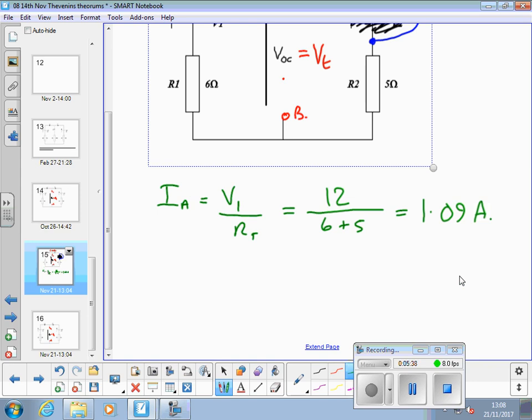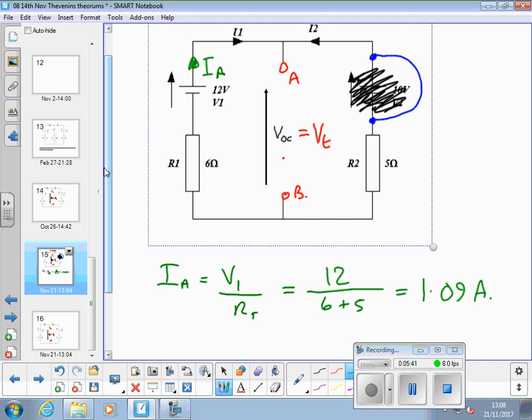IA is equal to V1 over RT. We might as well do this all in one go. It's not a particularly difficult calculation of the total resistance. So we go 12 volts divided by 6 plus 5 equals 1.09 amperes. Now, what will that enable us to calculate? Voltage drop. So, current's going that way. So that volt drop is that way. We could call that VR1. We could also calculate current going that way, voltage drop that way, VR2. Everyone agree with that? So we can calculate either or both of those two volt drops.